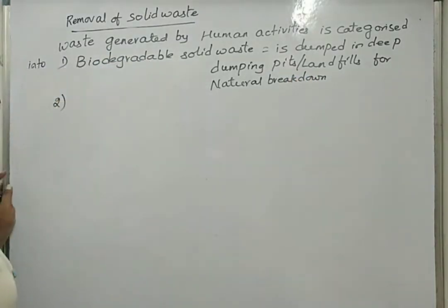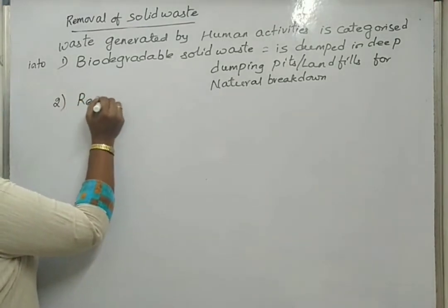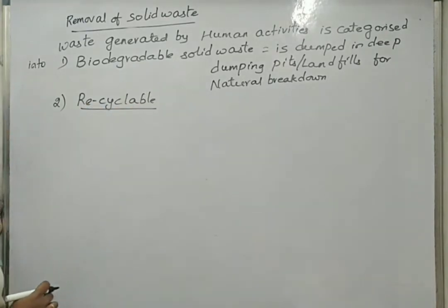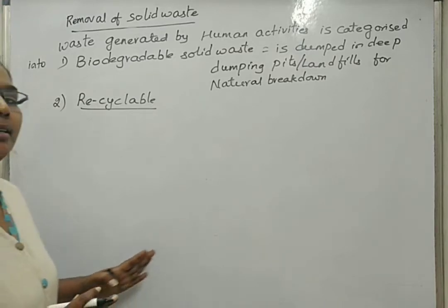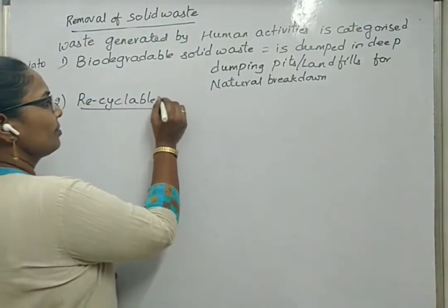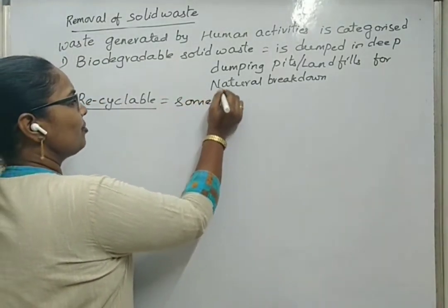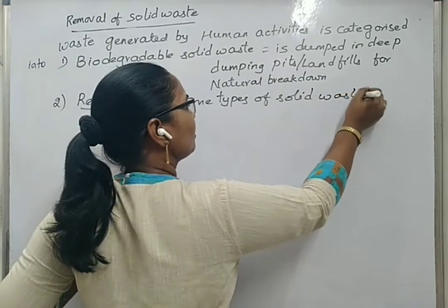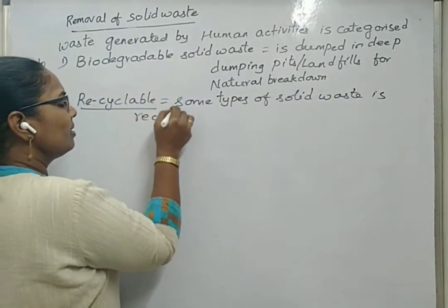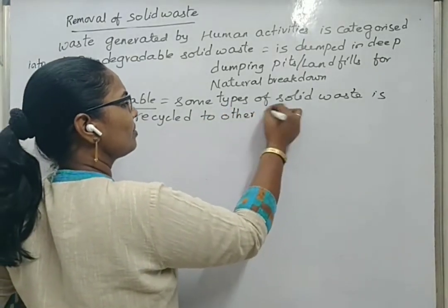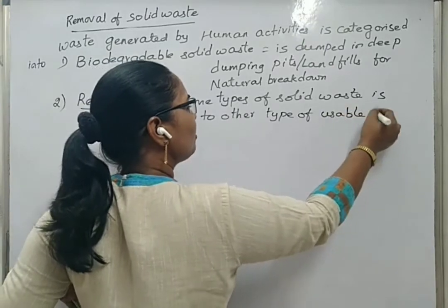The second type is recyclable solid waste. Here, the solid waste is separated for recycling and is used for production of other types of items or substances. Some types of solid waste are recycled into other types of usable products.